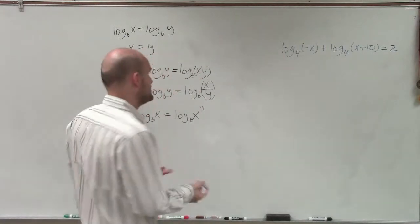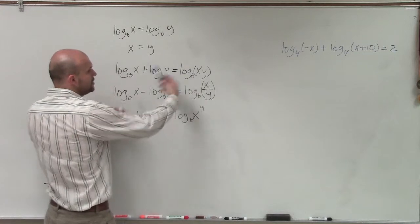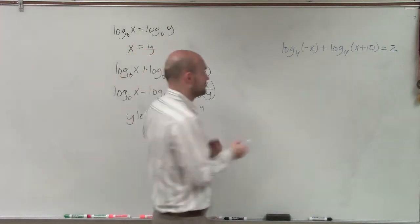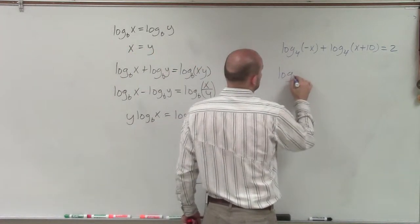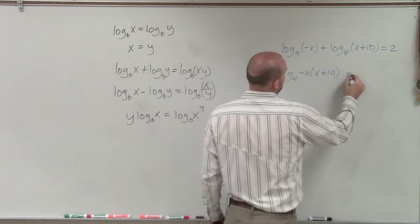And so what we're going to do here is again apply our properties of logarithms to say when we have the addition of two single logarithms, we can combine them into one single logarithm. So therefore, this would be log base 4 of negative x times x plus 10 equals 2.